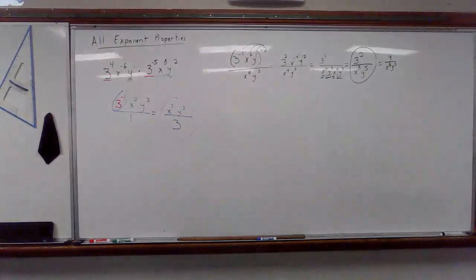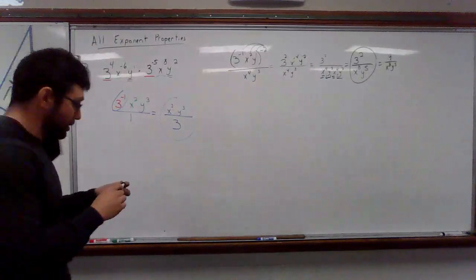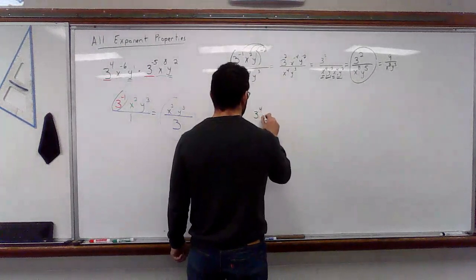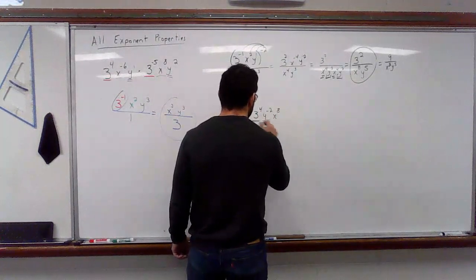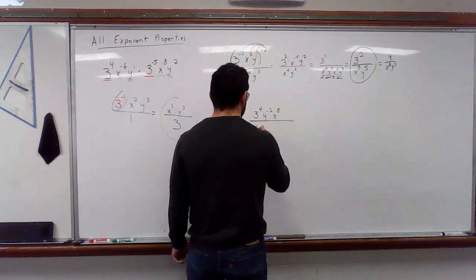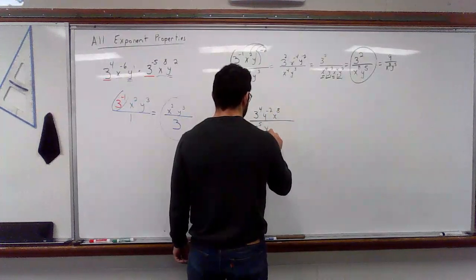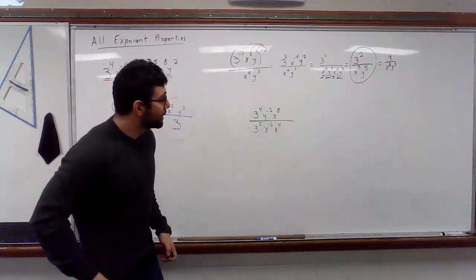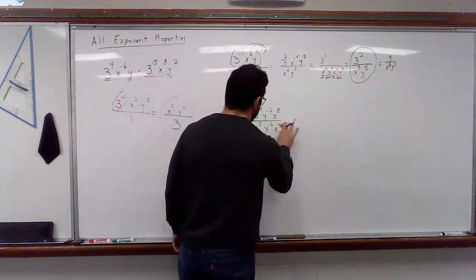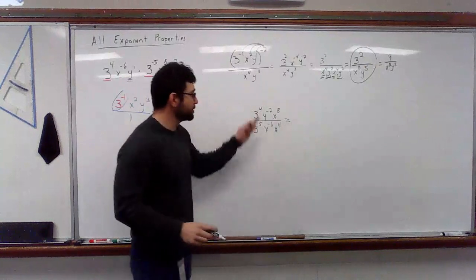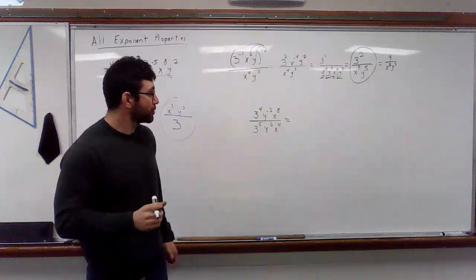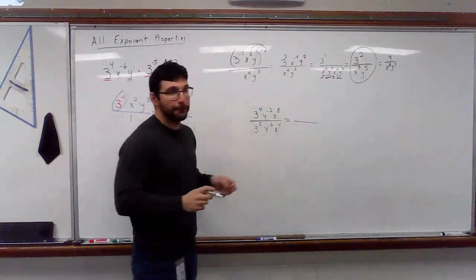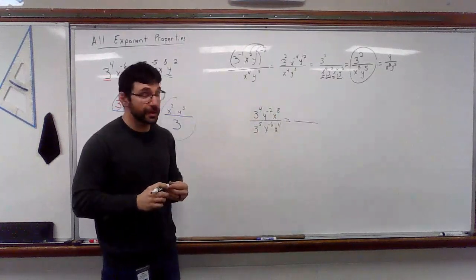Okay. So, let's say we've got 3 to the fourth y to the negative two x to the eighth divided by 3 to the fifth y to the negative six x to the fourth. Okay. So, a little bit trickier. Not that much, but a little bit. It's already a fraction. We've already got negative exponents. So, let's see what we have to do.